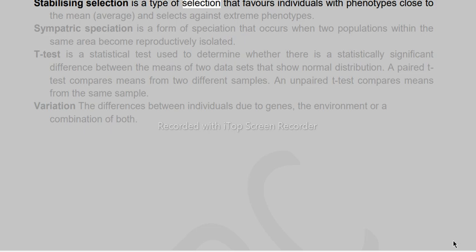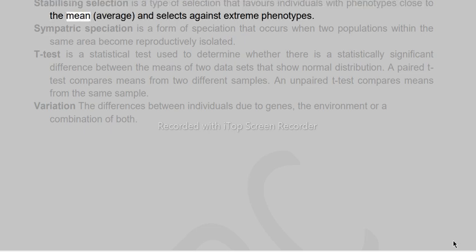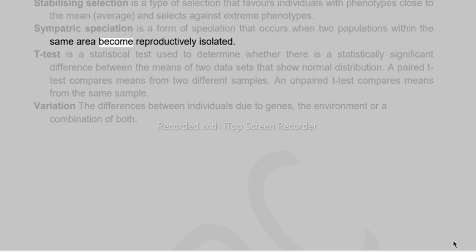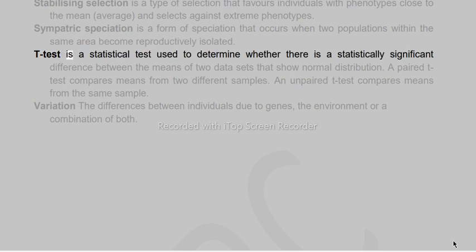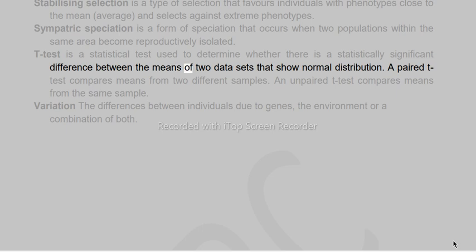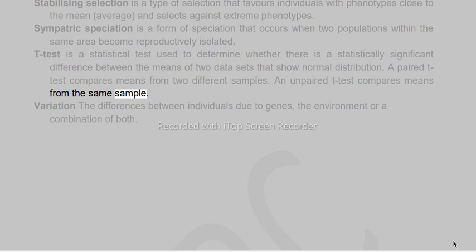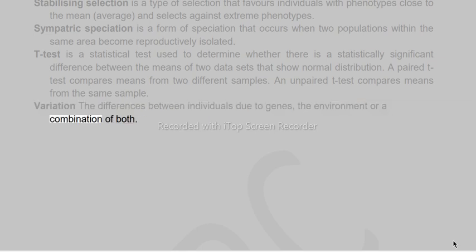Stabilizing selection favours individuals with phenotypes close to the mean and selects against extreme phenotypes. Sympatric speciation occurs when two populations within the same area become reproductively isolated. A t-test is a statistical test used to determine whether there is a statistically significant difference between the means of two data sets that show normal distribution. A paired t-test compares means from two different samples; an unpaired t-test compares means from the same sample. Variation refers to the differences between individuals due to genes, the environment, or a combination of both.